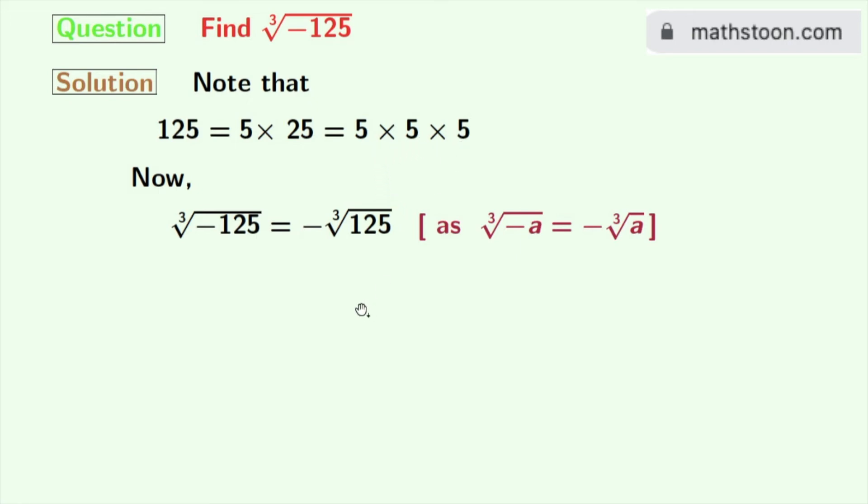As 125 is 5 times 5 times 5, we can rewrite this as minus cube root of 5 times 5 times 5, which is equal to minus 5. As we all know that cube root of a times a times a is equal to a.